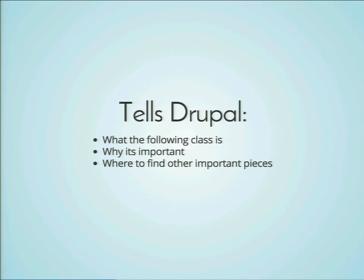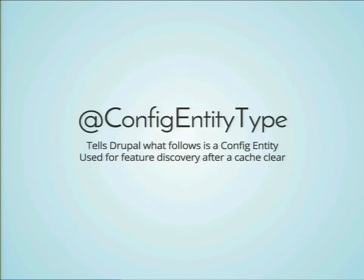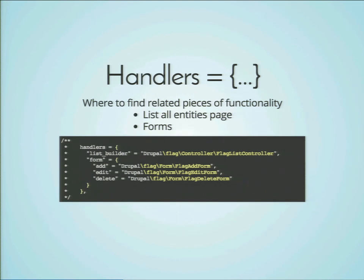The annotation tells Drupal what the following class is, why it's important, and where to find the other important pieces of functionality. In the flag annotation you'll notice there's an entity type, id and label stuff, handlers, and links. The first thing is the @ConfigEntityType annotation at the top — this is the annotation type. It tells Drupal what follows is a configuration entity. It's used for feature discovery after a cache clear, so Drupal treats files as text first, reads the annotation, and then knows what to actually execute in PHP. The handler sequence tells Drupal where to find related pieces of functionality, like the list page or key forms to create, edit, and delete this entity type.